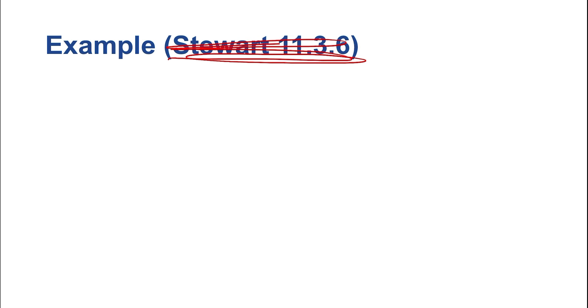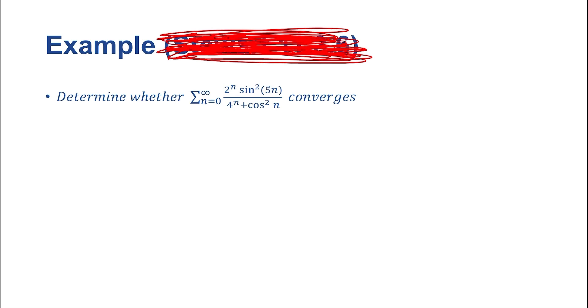I really want to do a harder example here. This one is not actually from Stewart's book, for once. We're going to be using a different example. We want to cover this series here — it looks a little bit nasty. We want to determine whether the sum from n equals 0 to infinity of 2 to the n times sine squared of 5n over 4 to the n plus cosine squared of n converges or not.